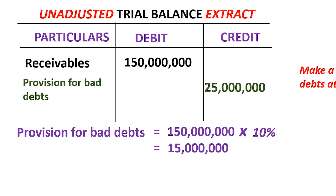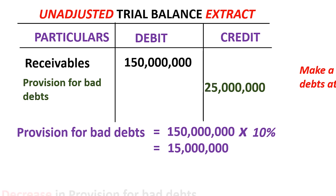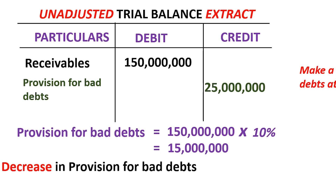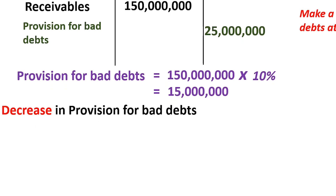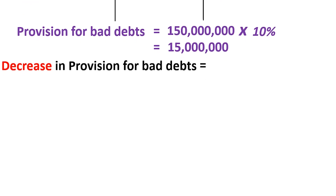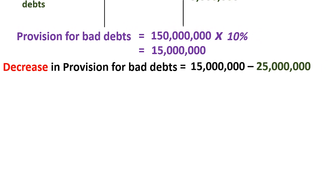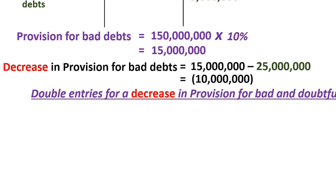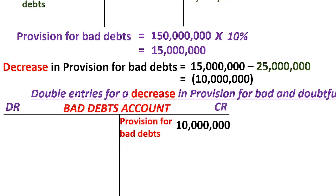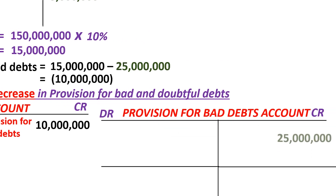Comparing the required provision of 15 million with the opening balance of 25 million, we realize there has been a decrease in the provision for bad and doubtful debts, and the decrease is 10 million. Because this is a decrease, it reduces the expense. We therefore credit the bad debts account by the decrease of 10 million, and debit the provision for bad and doubtful debts by 10 million. Provision for bad and doubtful debts is treated as a liability, and liabilities are reduced by debiting.